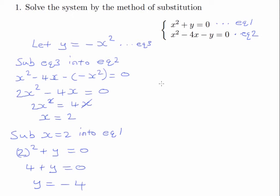The last thing we can do is always to check our answer. So we're going to use equation 2 to do this. So that will give us 2 squared minus 4 times 2 minus negative 4. That is 4 minus 8 plus 4 equals 0. So our answers are x equals 2, and y equals negative 4.